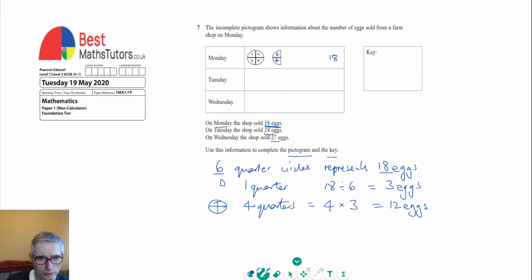So if we want to represent 24 eggs, that would actually be two of these. So two of these complete circles represents 24 eggs because we know each one of them is 12. So that's 12 plus 12 makes 24.